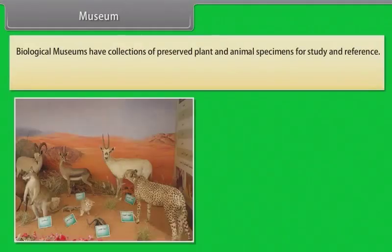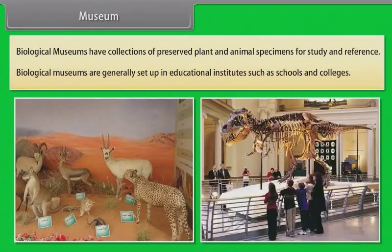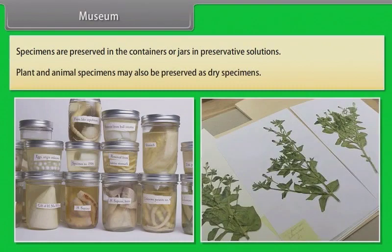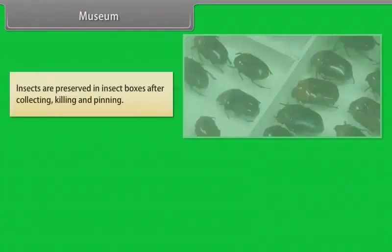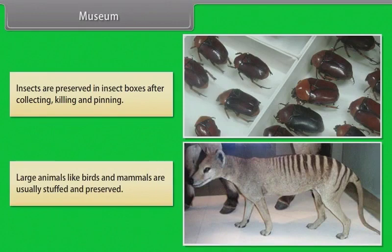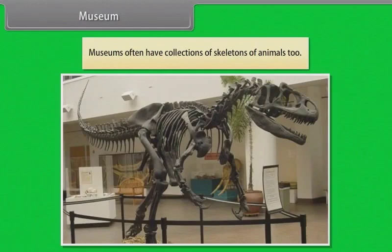Biological museums have collections of preserved plant and animal specimens for study and reference, and are generally set up in educational institutes such as schools and colleges. Specimens are preserved in containers or jars in preservative solutions, or as dry specimens. Insects are preserved in insect boxes after collecting, killing and pinning. Large animals like birds and mammals are usually stuffed and preserved. Museums often have collections of skeletons of animals too.